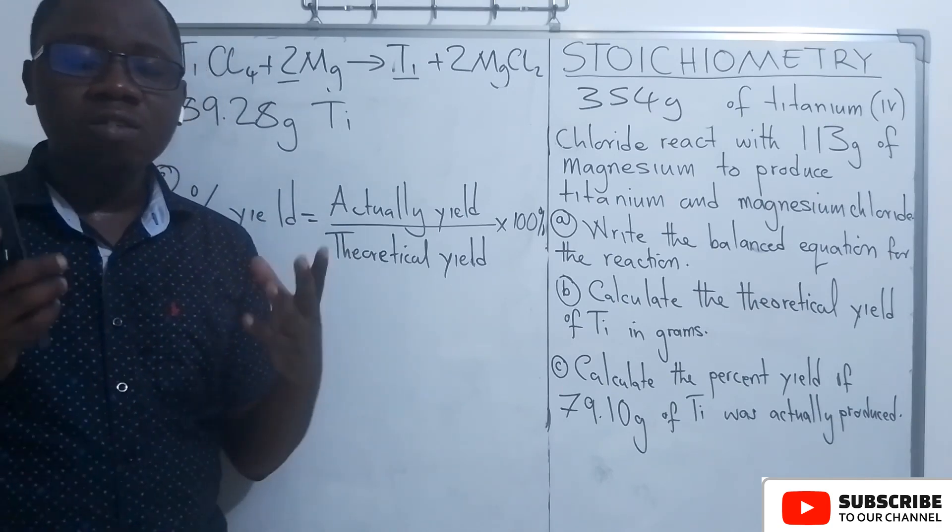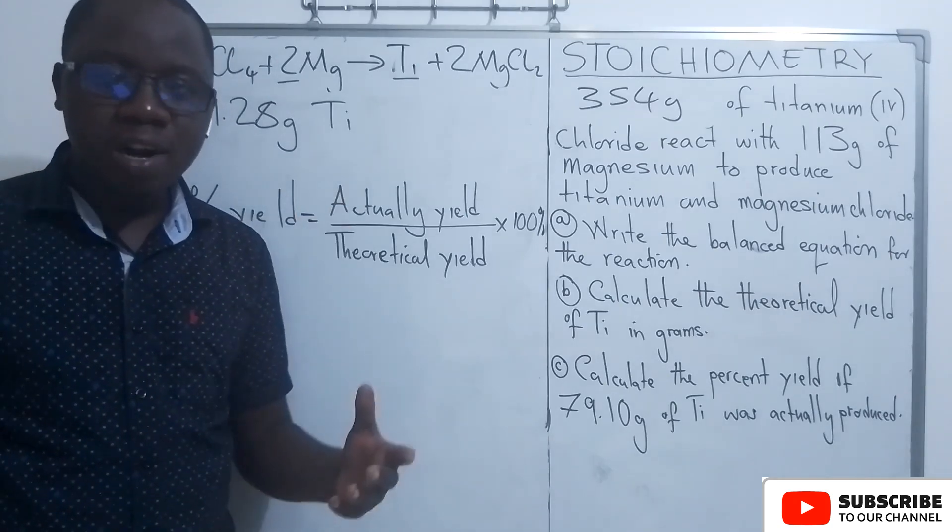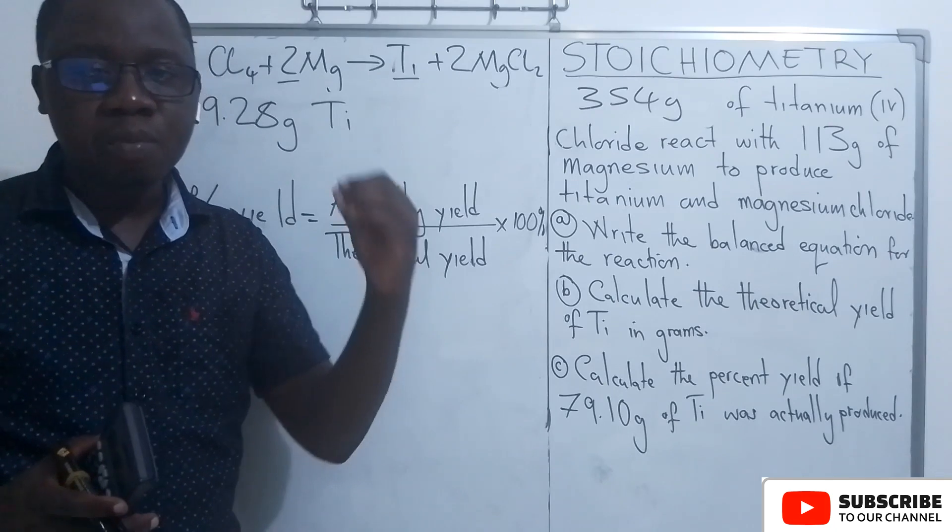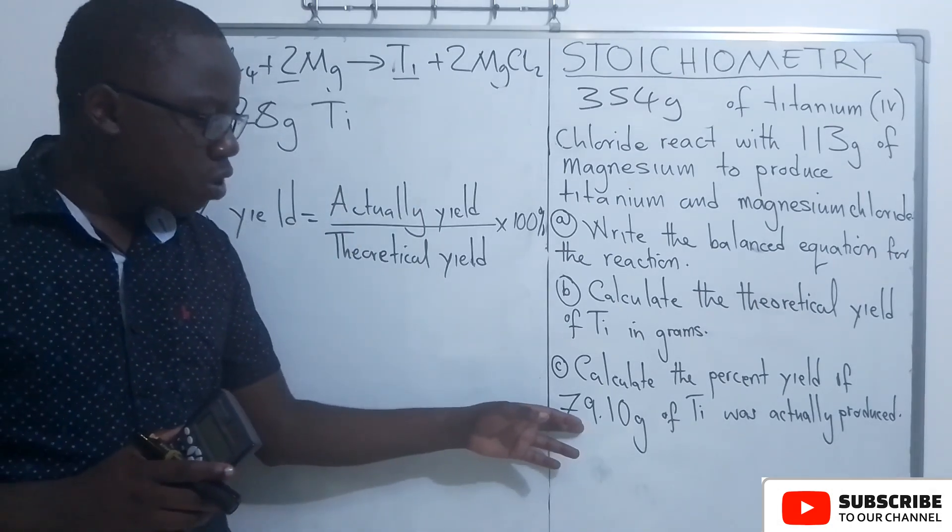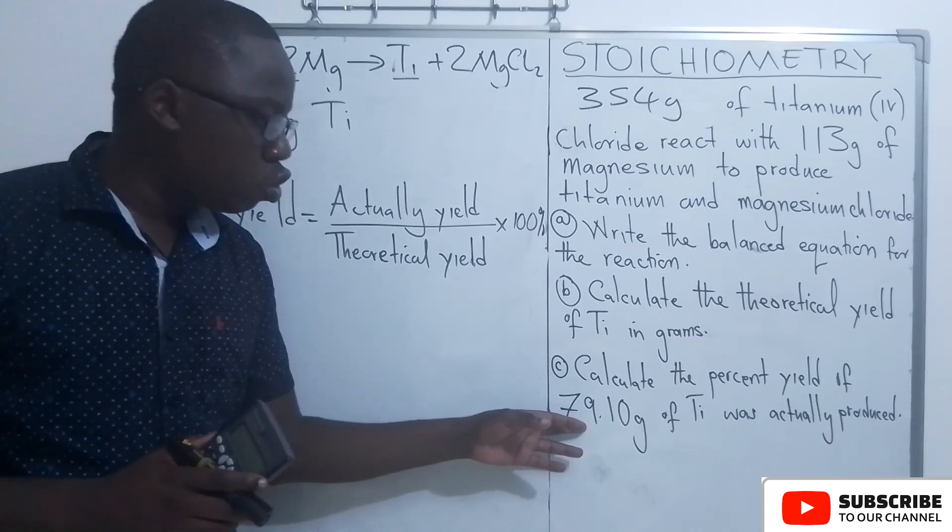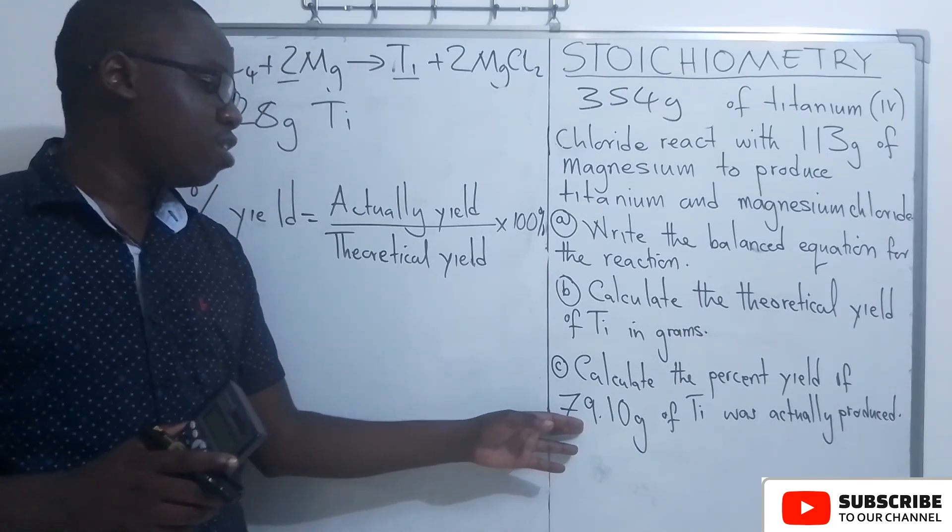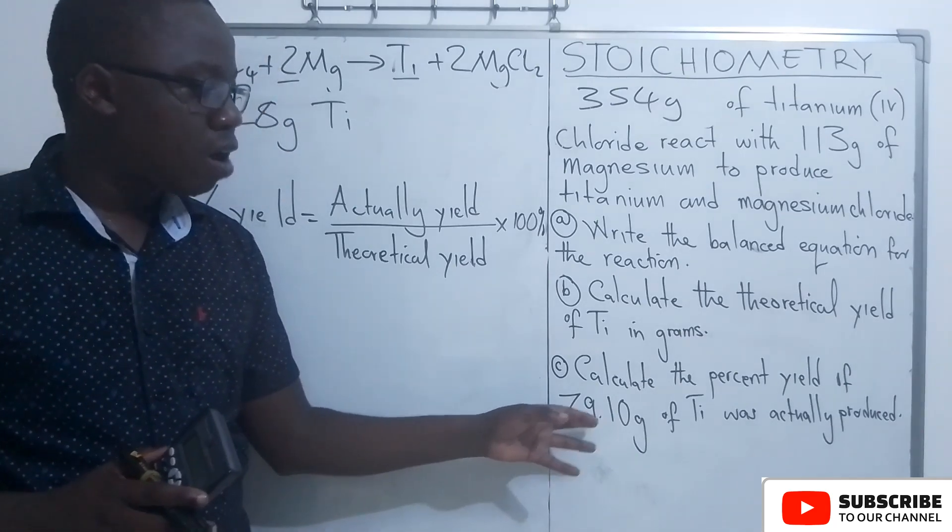The actual yield is the amount of product that is actually produced by the reaction. So the amount of product that has been produced by this reaction is 79.1 grams.